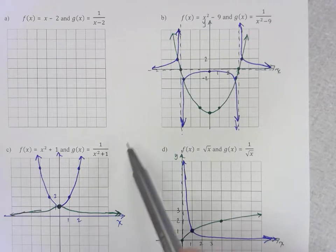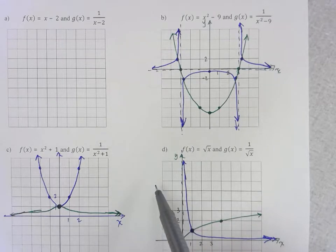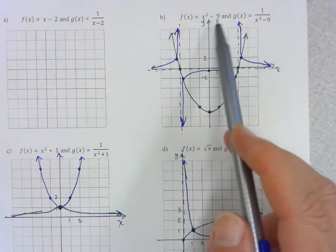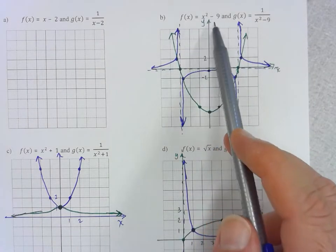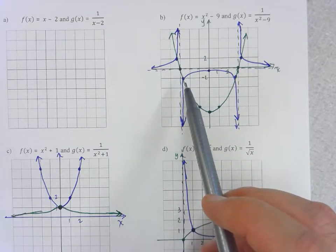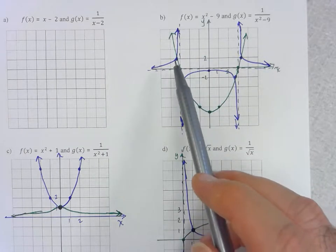The other thing to look for is that there are what we call invariant points on a function and its reciprocal and it all has to do where the original function is equal to positive or negative one because wherever the original function is equal to positive or negative one the reciprocal will have the same y value.